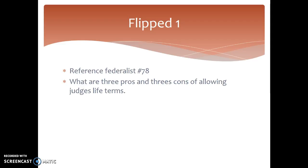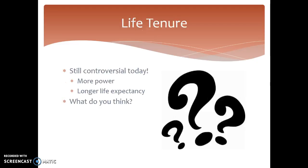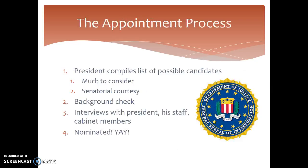The first assignment is to reference back to Federalist 78 that you read earlier and make a pros and cons list — three pros and three cons of allowing judges to serve life terms. It's still very controversial today. What life terms mean for the Supreme Court is that it has arguably more power than other branches, especially since life expectancy is longer these days.